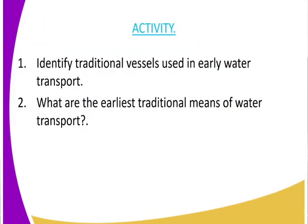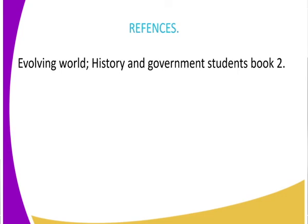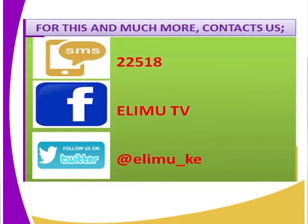In conclusion, can you identify some of the traditional vessels used in early water transport? We have already named a few — for example, rafts, kernels, and sailing ships. Can you name two other traditional vessels used in early water transport? And can you also name other traditional means of water transport? For the first question, name the vessels. For the second question, name the earliest traditional means of transport. Let us use our reference material, which is Evolving World History Form Two, fifth edition. For more lessons, watch Elimu TV — it is one of your favorite channels where you watch and learn. You can also interact with us via our SMS number, Facebook, and Twitter.